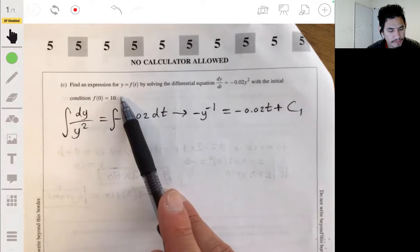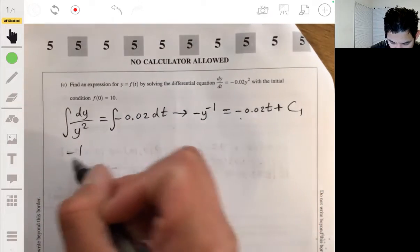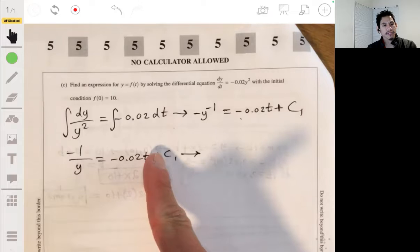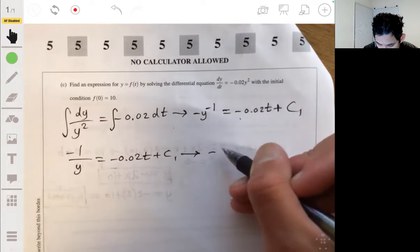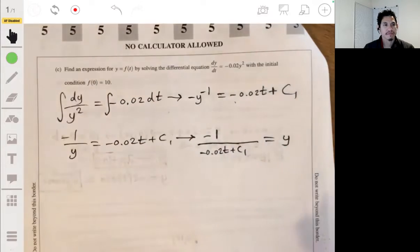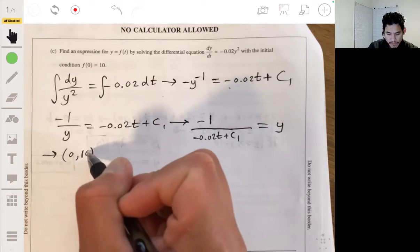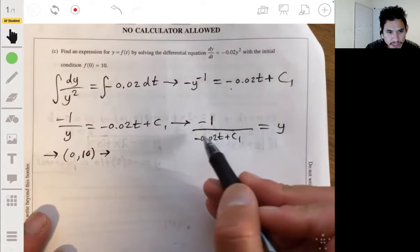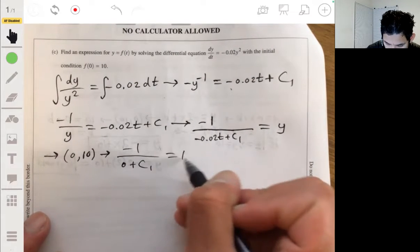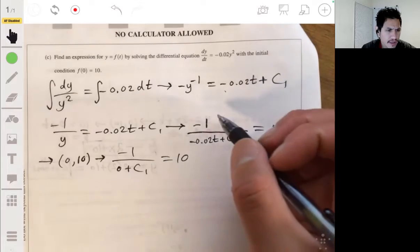Now we essentially want to solve for our constant with this initial condition. Let's first make this a neater equation for y. So negative 1 over y being equal to negative 0.02t plus c1. Let's multiply both sides by y and divide by this. So we get negative 1 over negative 0.02t plus c1 is equal to y. Now use the initial condition 0, 10 to solve for c1. So when t is 0, y is 10. This falls away, negative 1 over c1 equals 10. So c1 will just be negative 0.1.